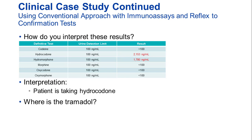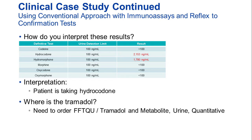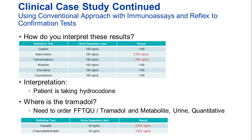However, the physician still wants to know where tramadol is. In this case, the physician has to order an additional confirmatory test for tramadol and its metabolite, which when ordered does come back positive or detectable. Unfortunately, this resulted in additional testing, expense, and a delay in the final results.